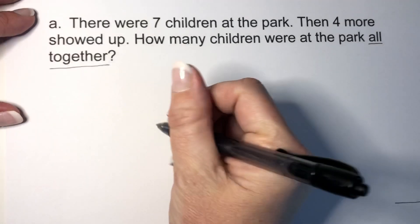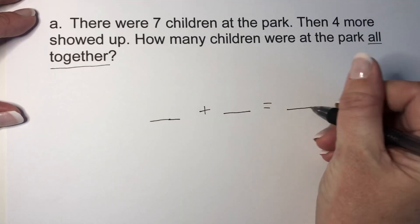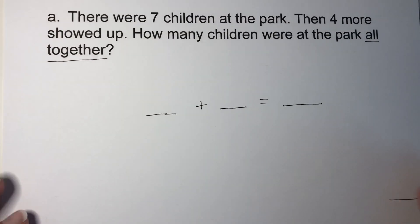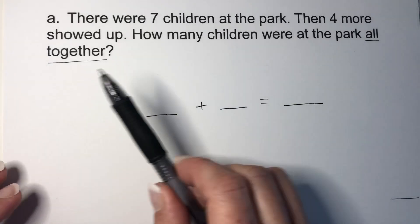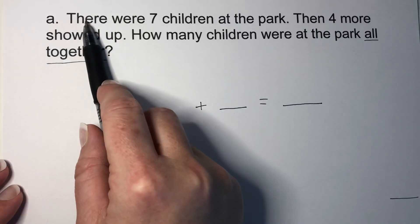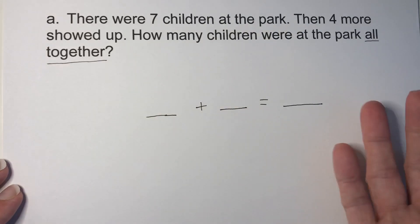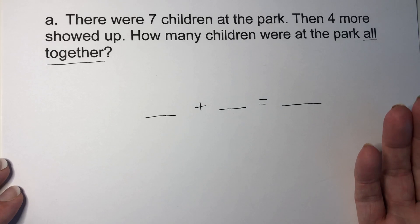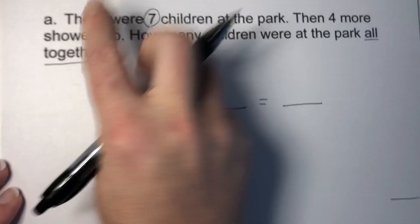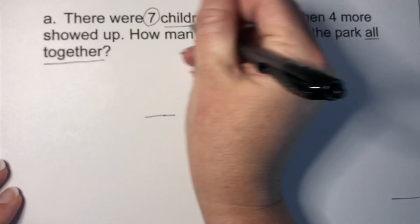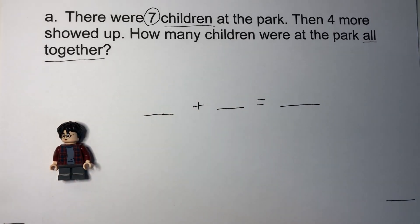We are going to make a written equation where we have two numbers together, and it's going to equal a number. But we're also going to make a picture equation where we show this in pictures. I'm going to start with the pictures first. So first we're going to start with the numbers that we know. There were seven children at the park. How many children were at the park in the very beginning? You can answer out loud if you like. There were seven. So let's go ahead and show seven children. I have some Lego people here.